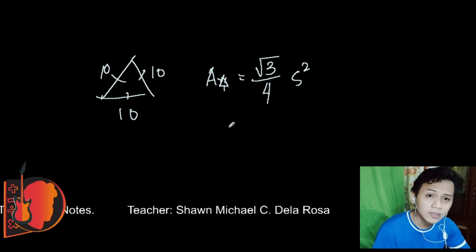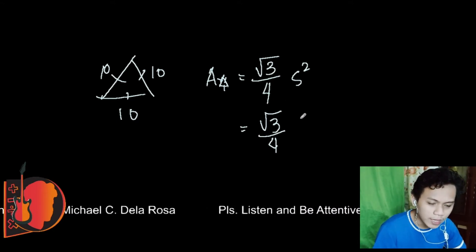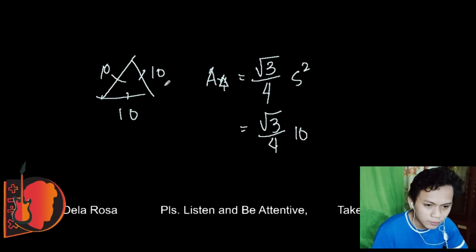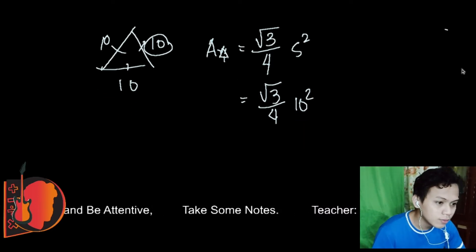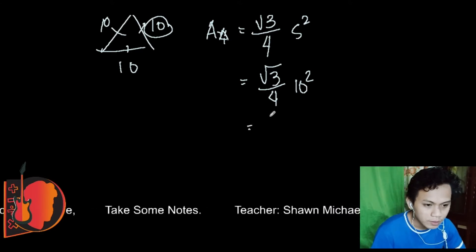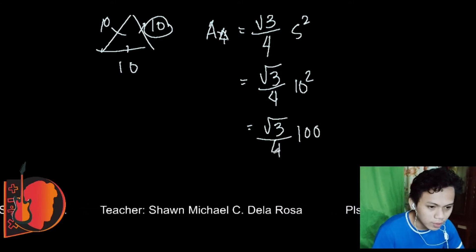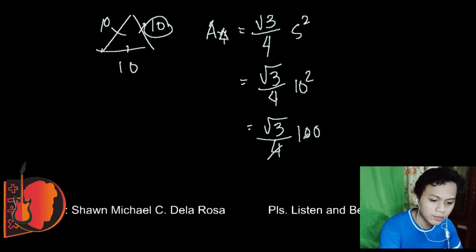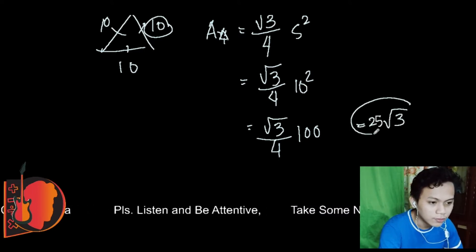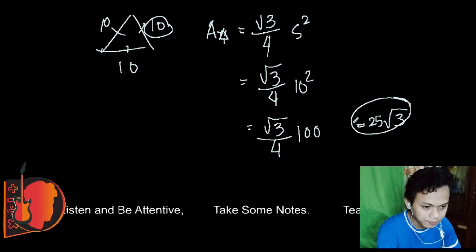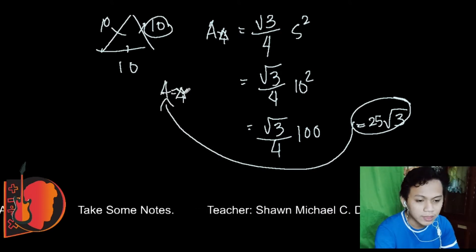Applying the formula: square root of 3 over 4, times s squared, where s equals 10. So 10 squared is 100. Then 100 divided by 4 is 25. The answer is 25 times the square root of 3.